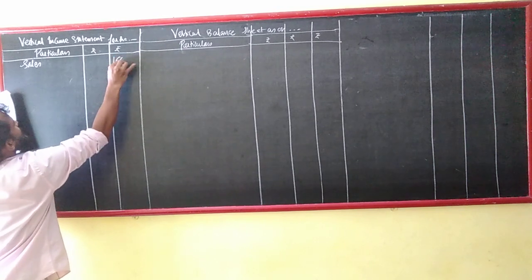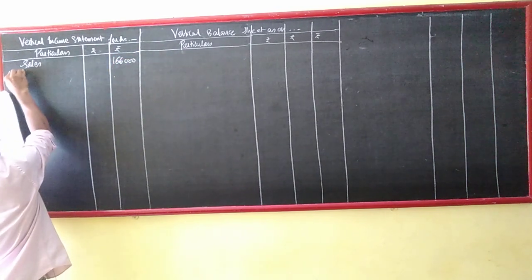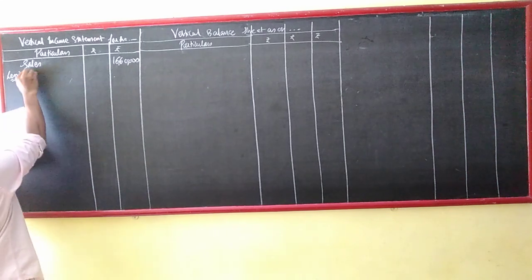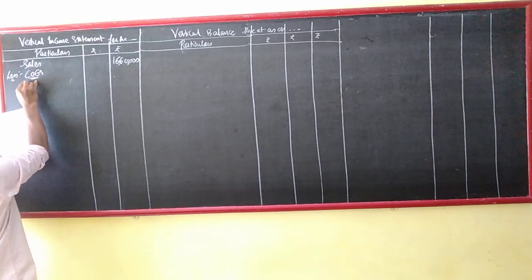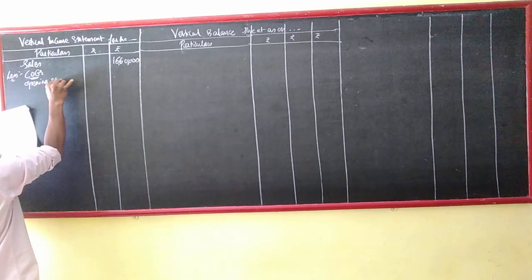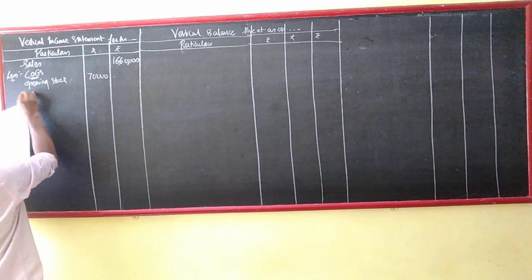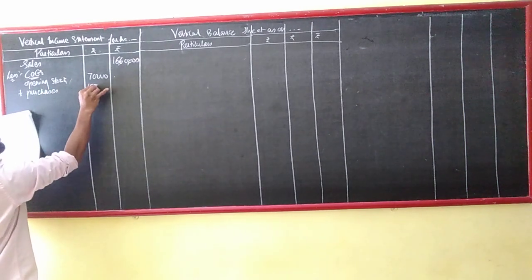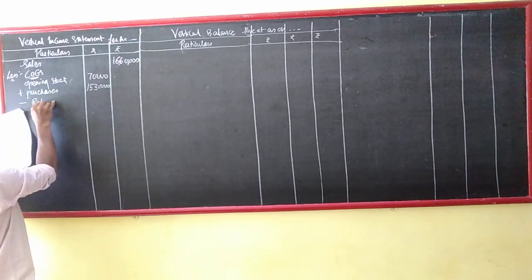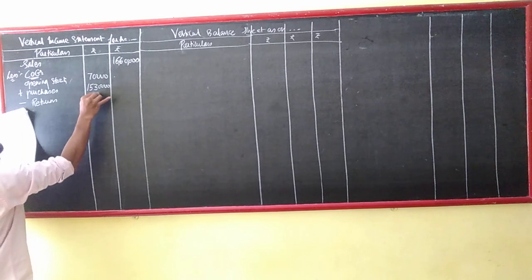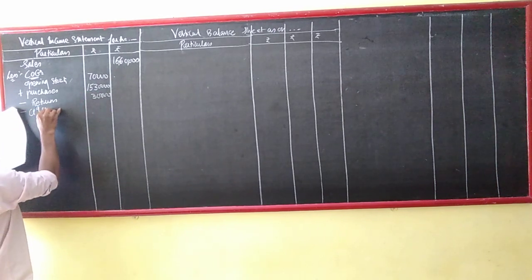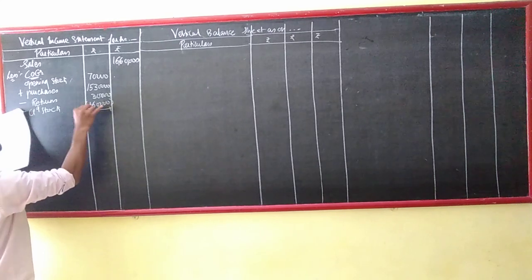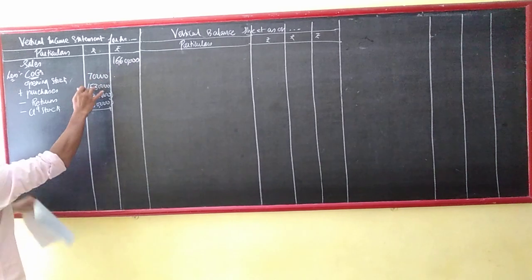Clearly given 16,60,000. Less. Cost of goods sold: opening stock, they have given 70,000. Add purchases - they have said 30,000. Less returns - they have said 30,000. Less closing stock. Cost of goods sold comes to 7,000 plus 1,000.